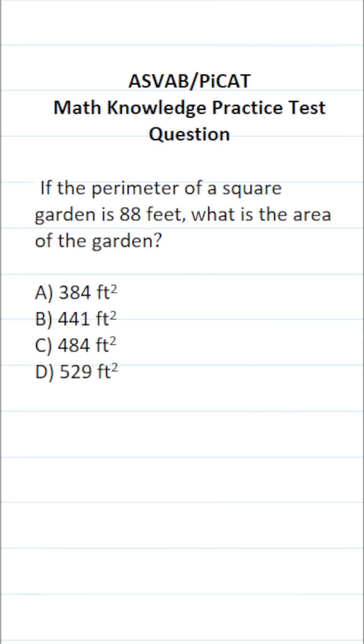This math knowledge practice test question for the ASFAB and PiCAT says, if the perimeter of a square garden is 88 feet, what is the area of the garden?